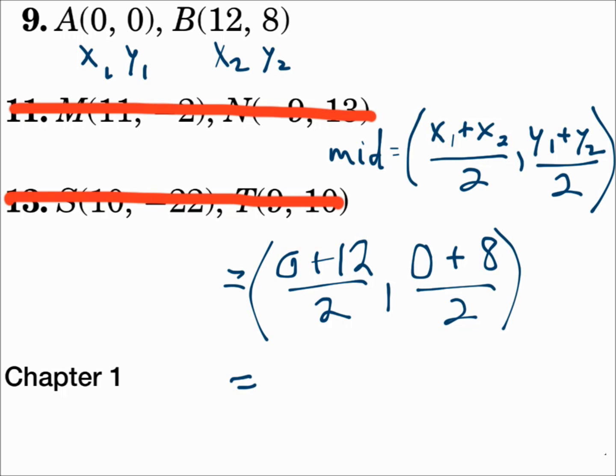0 plus 12 is 12, divided by 2 is 6. 0 plus 8 is 8, divided by 2 is 4. The midpoint is (6, 4). It is written like a point in parentheses, like an ordered pair.